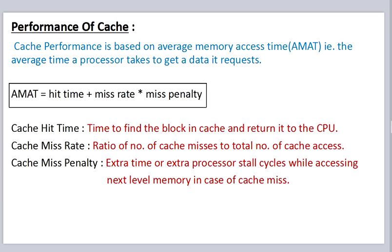When discussing cache memories, in this video we will study about the performance of cache. Cache performance is based on average memory access time, that is the average time a processor takes to get data on request. Average memory access time equals hit time plus miss rate multiplied by miss penalty.